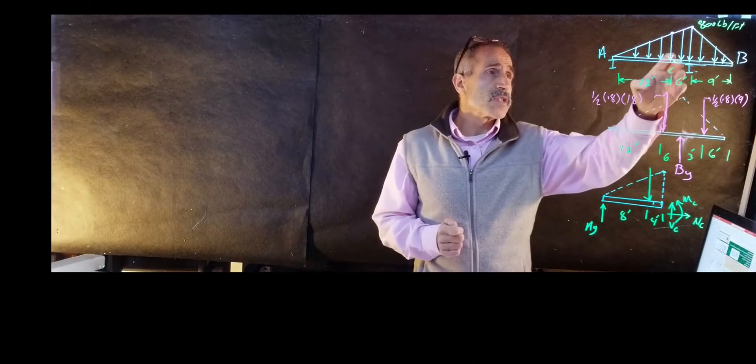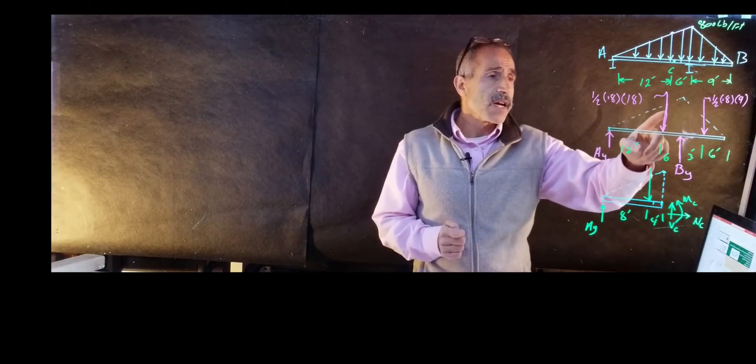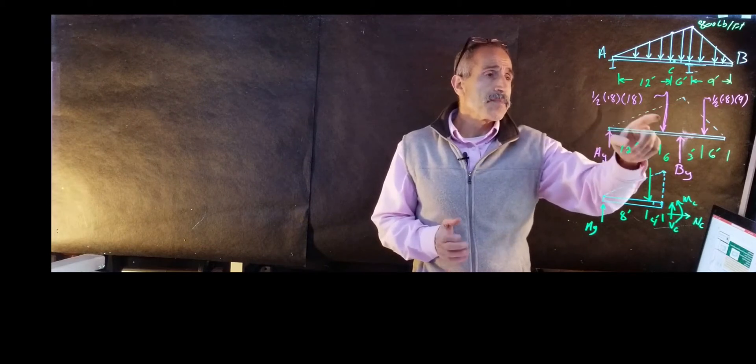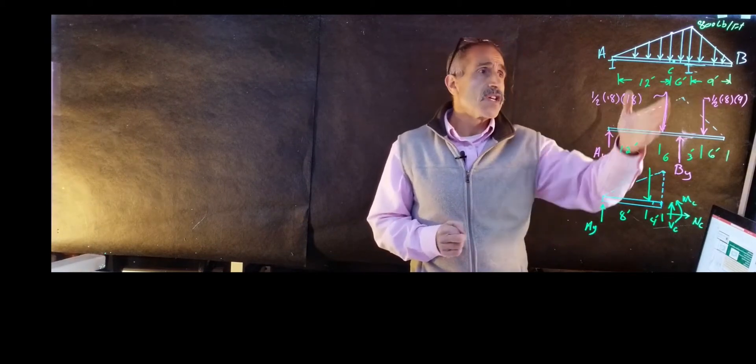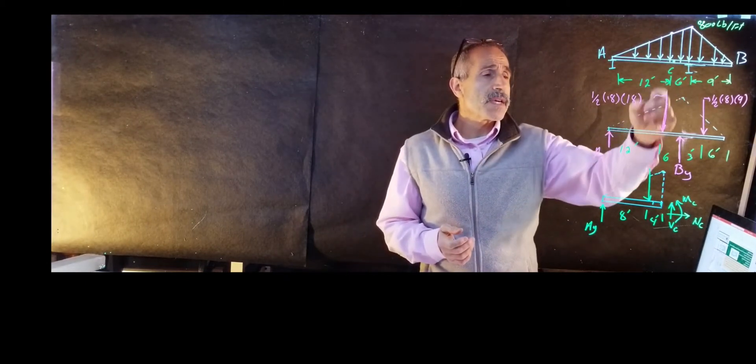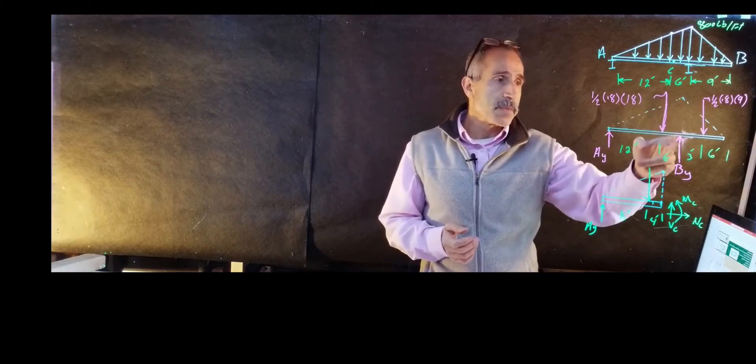So to convert to a concentrated load is basically the area underneath this triangle, which is one half of 0.8 times 18. The location of it is in the back of your book. For triangle load it's one third from the base, which comes out about 12 feet from the end or six feet from its base right there.